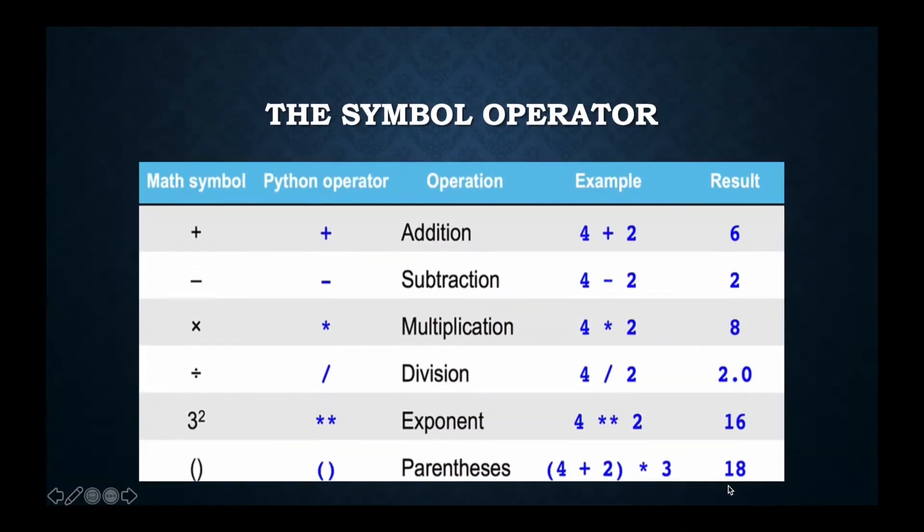First, we will be talking about the symbol operator. In math symbols and Python operators, we use the same addition sign or plus sign. In subtraction, we use the same minus sign. But in multiplication, in math we use the multiplication sign, but in Python we use the star sign, which is called the asterisk.